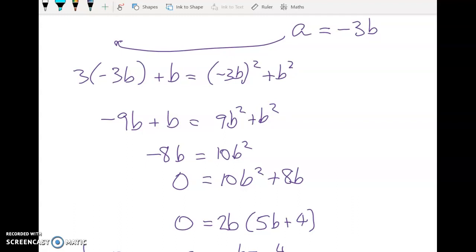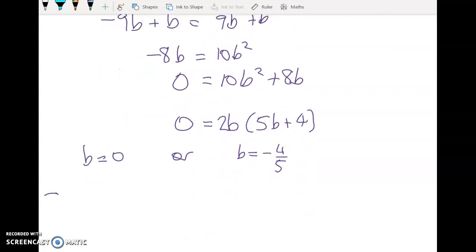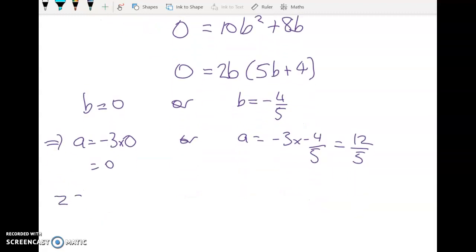But we know that a is equal to negative 3b. So a is equal to negative 3 times 0 which is 0. I'll come back to this. Or a is equal to negative 3 times negative 4 fifths which gives me 12 fifths.